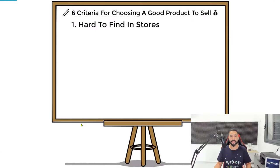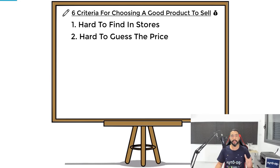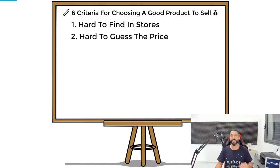The second criteria is that it should be hard for customers to guess the price of this item. That UV toothbrush sanitizer is not a product that people usually buy, so it's hard to guess the price of something you've never bought before. You can guess around how much you'd want to spend — I wouldn't spend $100 or $150 on this product, but if it costs $30, $40, or maybe even $50, sure, why not? It's for the health of your teeth. With the second criteria being that it's hard to guess the product's price, you can make great profit — you can price them up to three times their worth or even more.